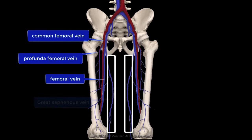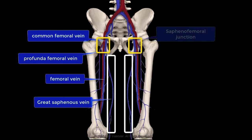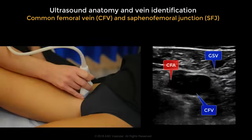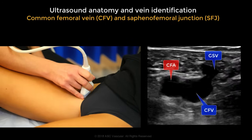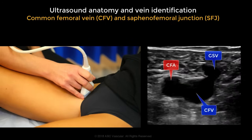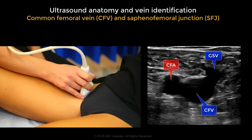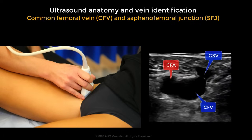The main superficial vein of the thigh is the great saphenous vein, which communicates with the deep system by joining the common femoral vein through the saphenofemoral junction. To identify the common femoral vein, position the transducer in cross-sectional view in the groin and you will identify the common femoral artery, the common femoral vein, and the great saphenous vein.